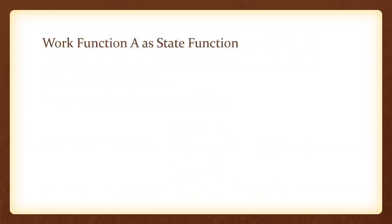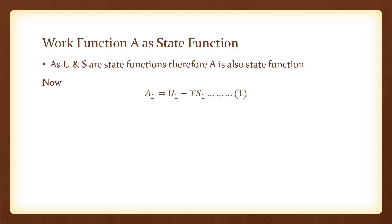Let us discuss the next point: work function A as a state function. We know that work function A is given by the equation A equals U minus TS. Here, internal energy U is a state function and entropy is also a state function, therefore the function which depends upon these two is also a state function. For the initial state we can write A1 equals U1 minus TS (equation 1), and for the final state at constant temperature, A2 equals U2 minus TS.